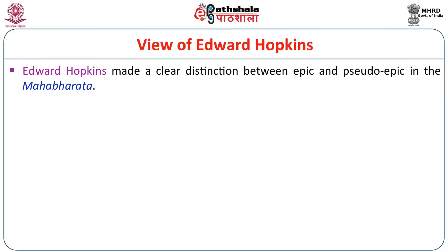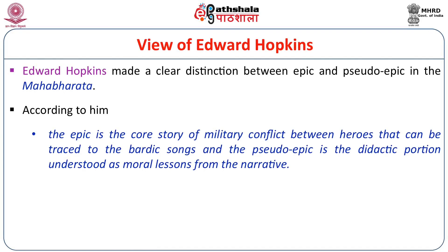Two important scholars on Mahabharata must be mentioned. Edward Washburn Hopkins, a British Sanskritist, was the first serious scholar to discuss the importance of Mahabharata. In works written in the late 19th century — 'The Great Epic of India' and 'The Social and Military Position of the Ruling Caste in Ancient India' — he identified two different parts: the core epic about the military war, and the pseudo-epic or didactic part comprising Shanti Parva and Anushasana Parva, added at a much later time.